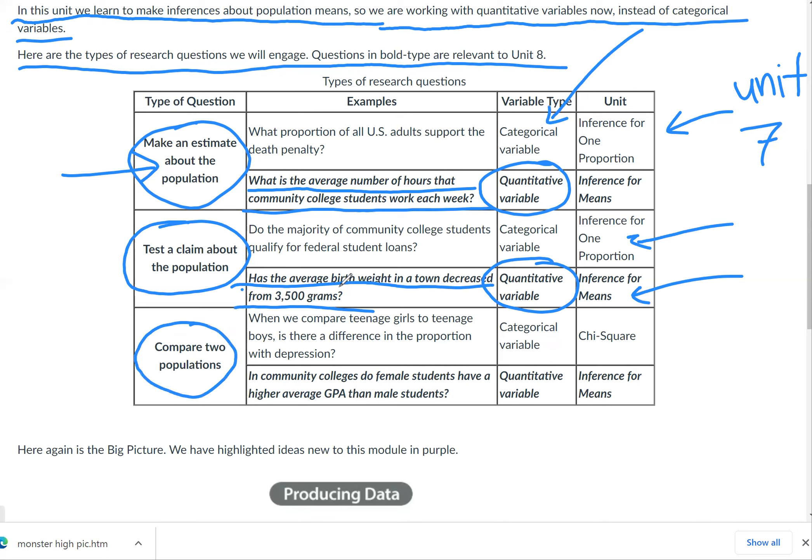We will also compare two populations, just like we did in the last unit. But in this, instead of using categorical variables, we'll use quantitative variables. So we'll use inference for means, which is what we're introducing in this unit on this page. An example would be: in community colleges, do female students have a higher average GPA than male students?